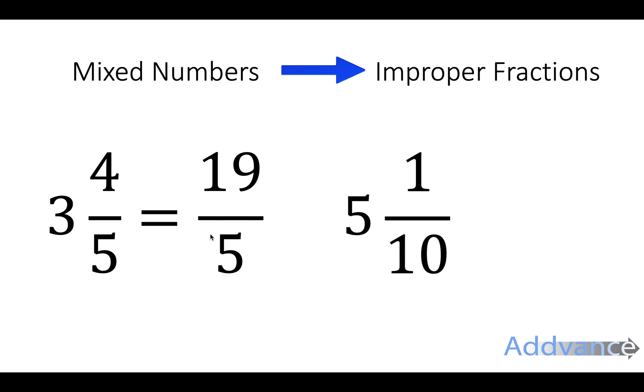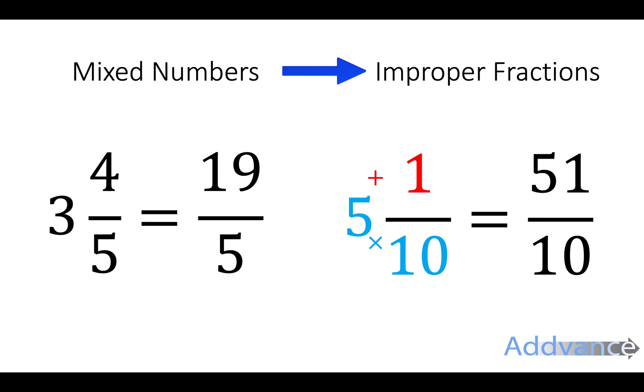Let's see that again. We do the big number times the denominator. 5 times 10 is 50 plus 1 is 51 over 10. The bottom number stays the same here. Remember for all of these the bottom number will stay the same.